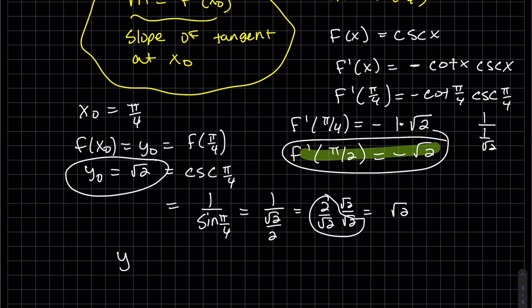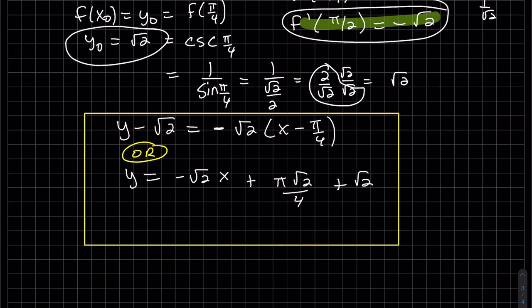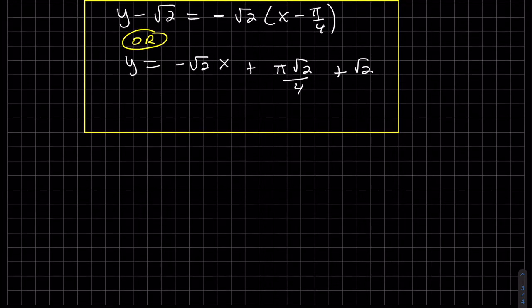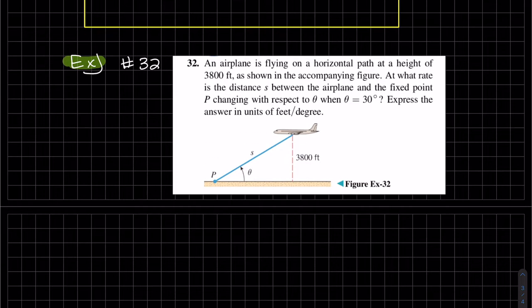Those are the same. Top and bottom. We have it. So y minus y knot. M minus square root of 2. x minus pi over 4. So x knot. Keep it that way, or solve for y. Either or. But you don't need to go further. Our last example is from the book. It's number 32 from the book.